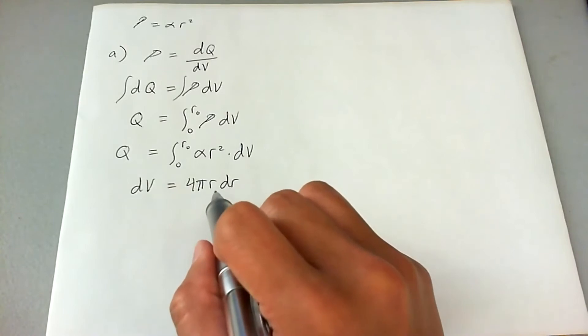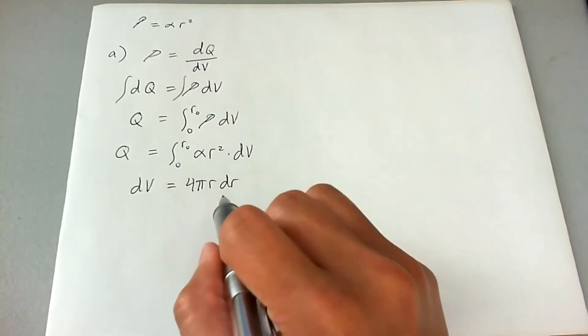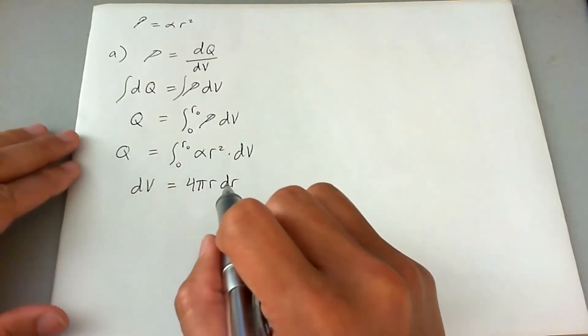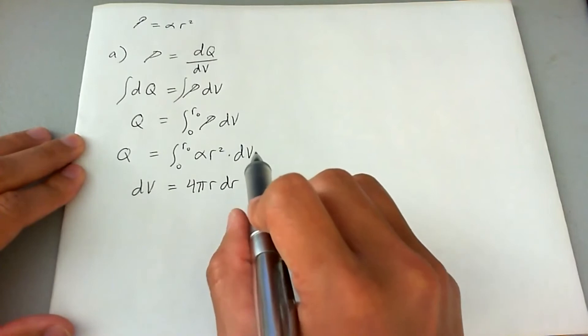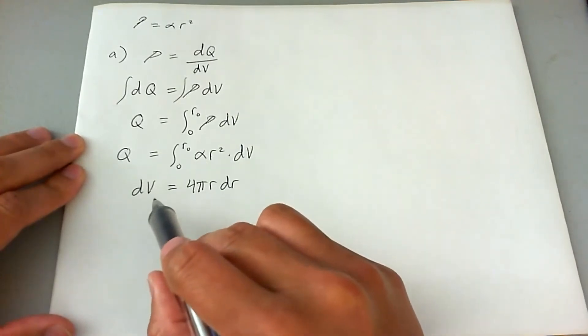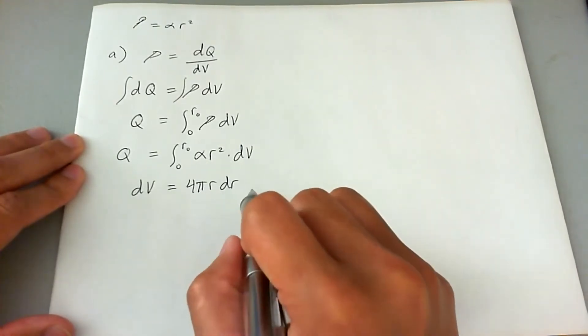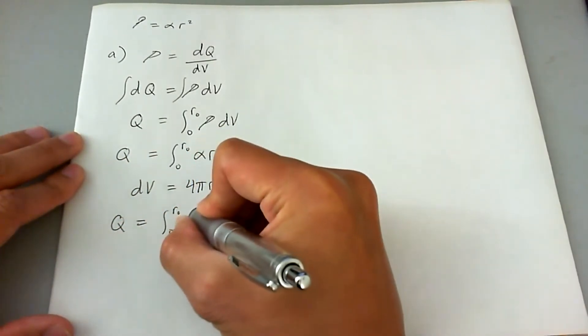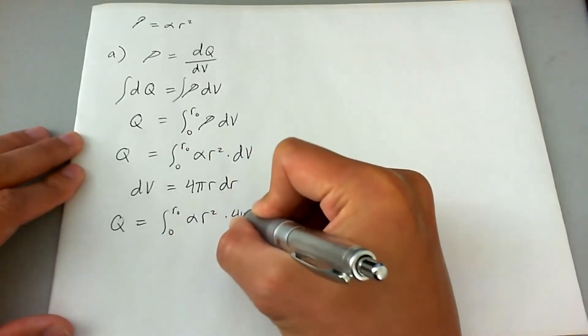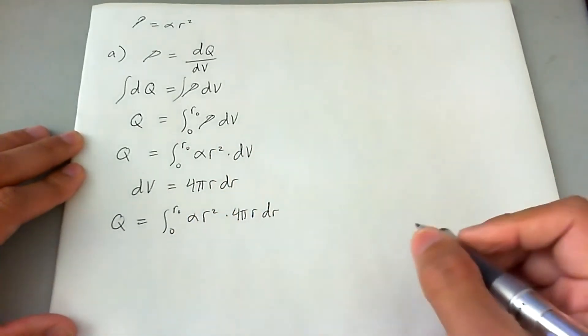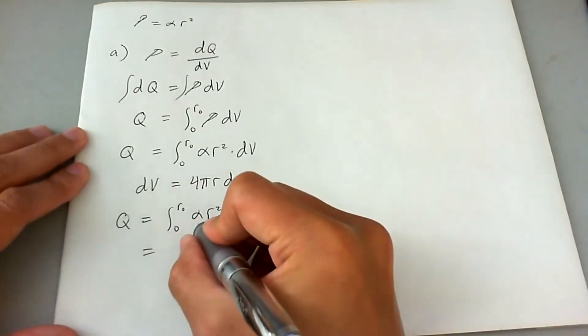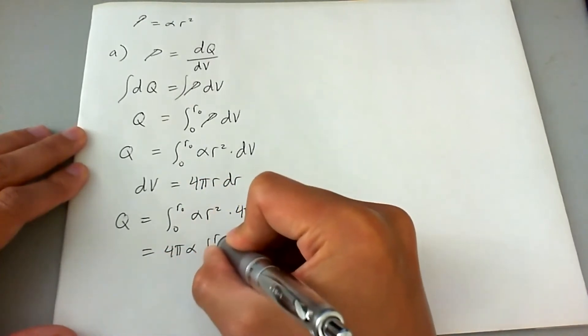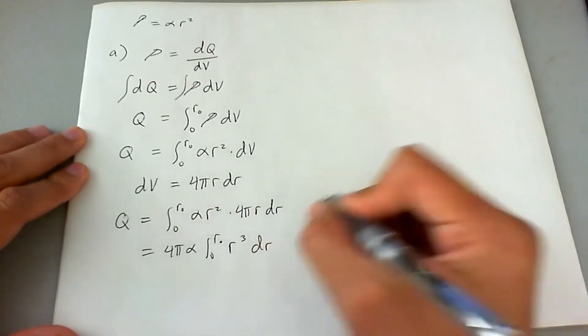So only in DR does this function, this integrand, vary. If it varies with theta, then it's a whole different DV, as you might have learned in calculus already. So for symmetrical integrands, DV for a sphere is just 4 pi R dr. So Q is then equal to zero to R naught alpha R squared 4 pi R dr. Let's make this look a little prettier and take out all the constants. 4 pi alpha from zero to R naught of R cubed dr.